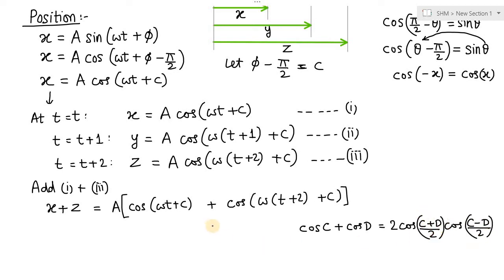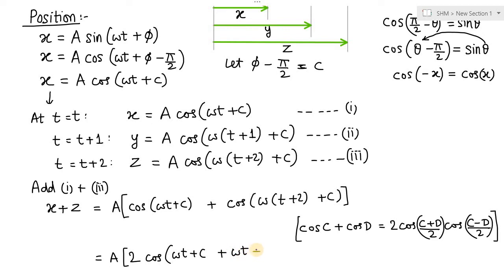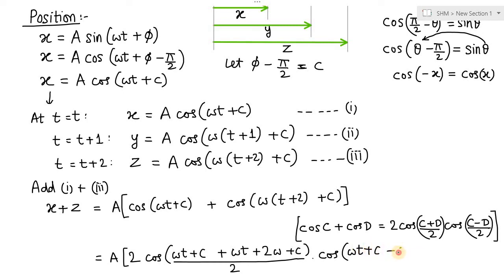We use the well-known formula from mathematics: cos C plus cos D equals 2 times cos((C plus D)/2) times cos((C minus D)/2). Applying this, we get a into 2 times cos of [(ωt plus c plus ωt plus 2ω plus c) divided by 2] into cos of [(ωt plus c minus ωt minus 2ω minus c) divided by 2].